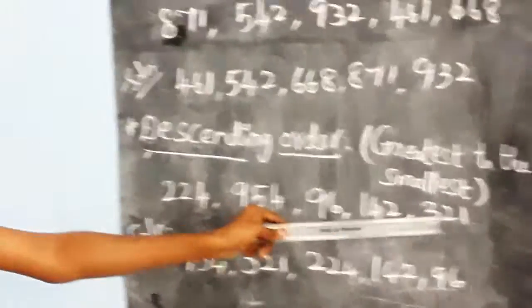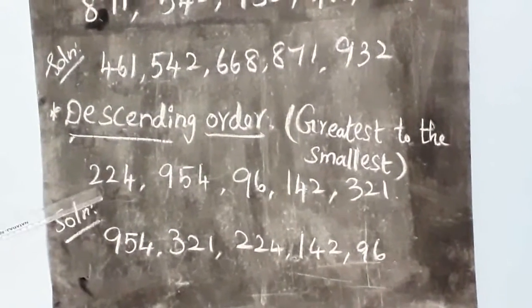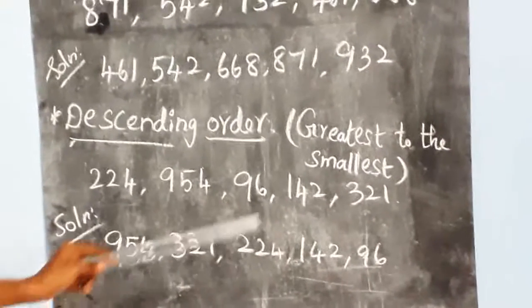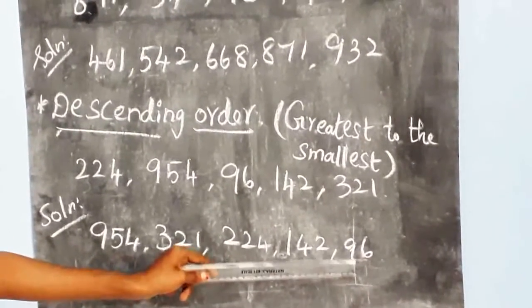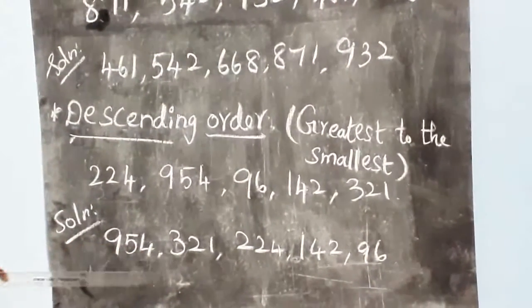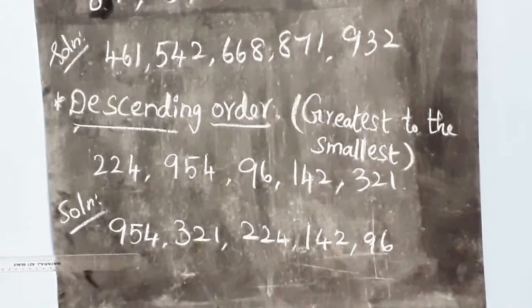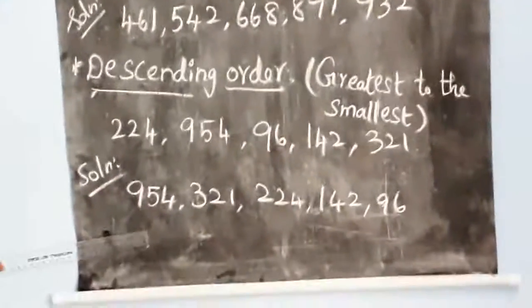Then 3, so 321. Before 3, 224. Then 142. Last one, the two-digit number, is 96. It is going from greatest to smallest. This arrangement of numbers from the greatest to smallest is known as descending order.